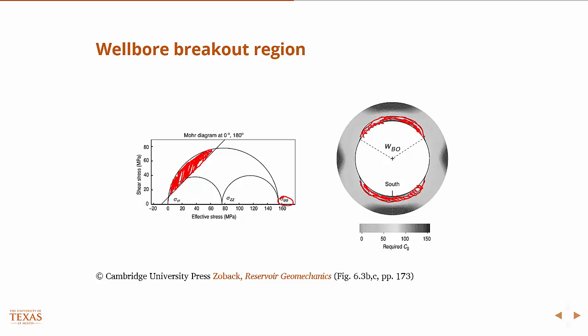What's plotted here is, if you remember from the Mohr model, there's this parameter C₀. So it's the value of that C₀ parameter that is needed to have a stable wellbore. This figure is in color in the book if you want to take a look. Basically, it just shows that in areas where there's a high C₀, the rock needs to be stronger in that area to avoid having wellbore instability.